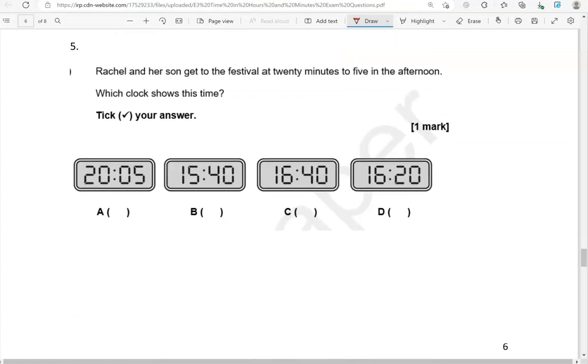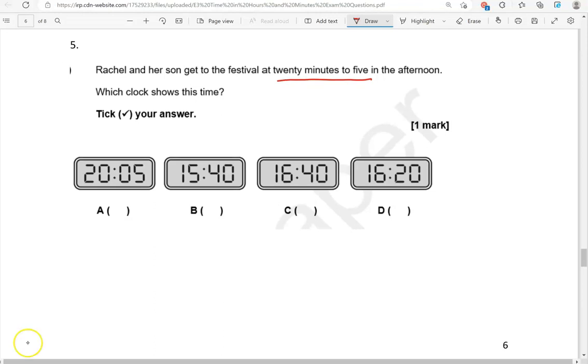Rachel and her son get to the festival at 20 minutes to 5 in the afternoon. Which clock shows this time? Tick your answer. 20 minutes to 5 means that it needs 20 minutes to get to 5 o'clock, so it is 4:40 PM. Because there are 60 minutes in one hour, so 60 take away 20 is 40.